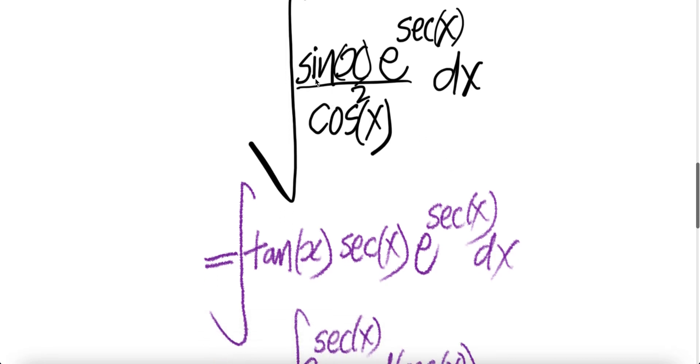Now this sin x divided by cos square x can be written as sin x divided by cos x, which is tangent x, but you still have one over cos x which is sec x, and this piece is here.